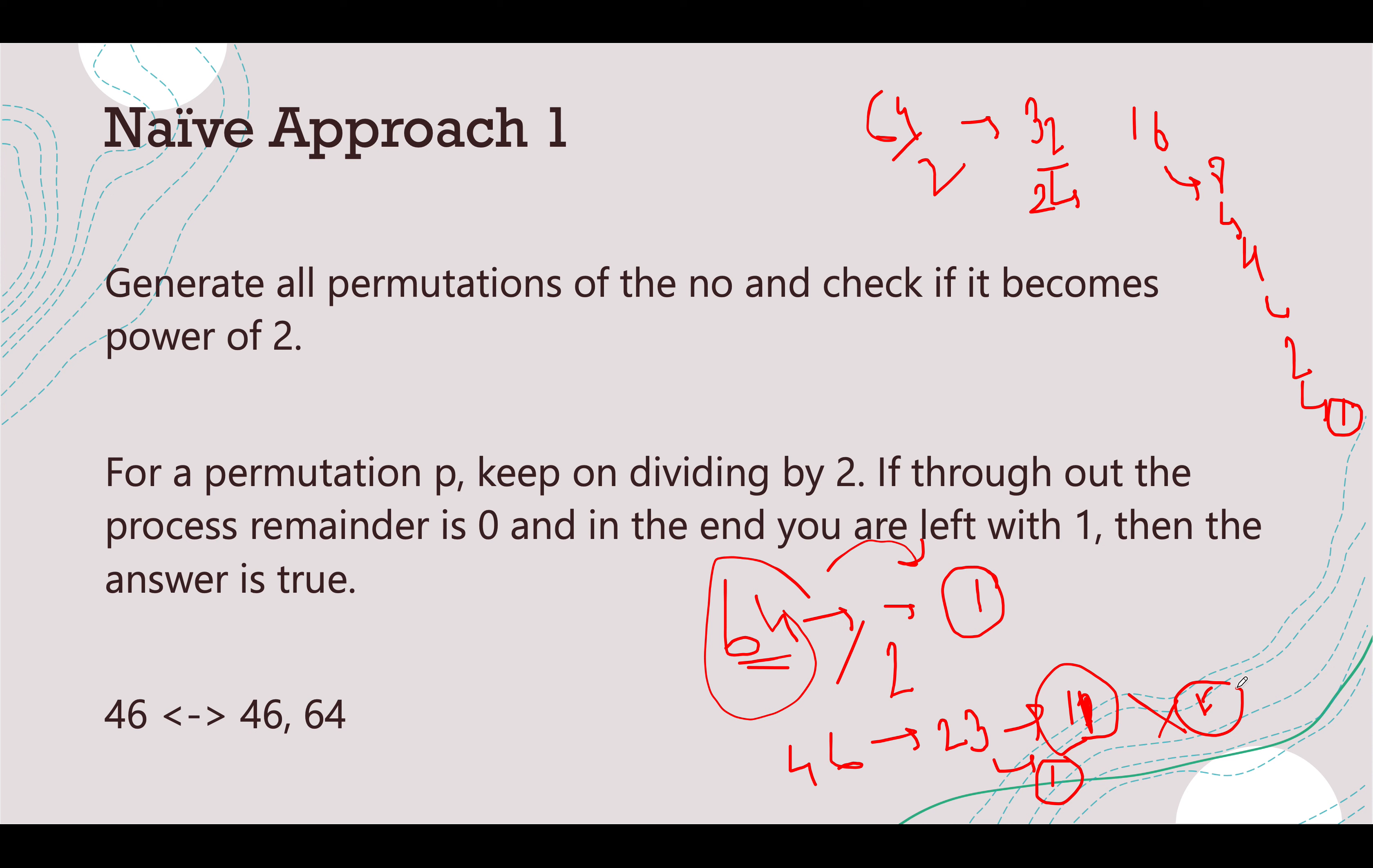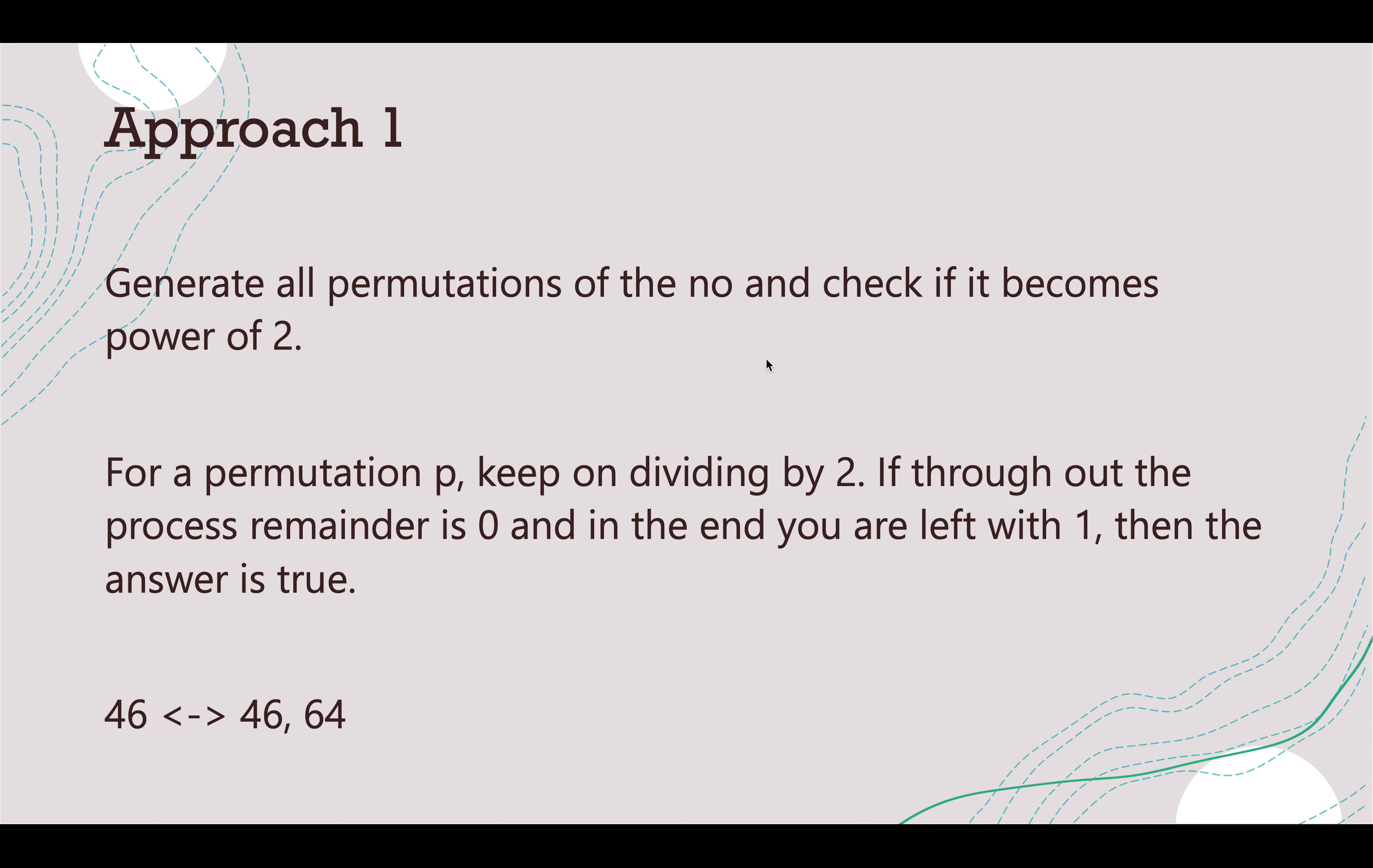This is a slightly time consuming process because you are generating all the permutations of a given number and for each permutation you are checking whether the number is a power of 2 or not. The time complexity would be n factorial times log n. n factorial for generating all the permutations and log n for checking whether the number is a power of 2 or not. Can we do something better about it? Yes, we can.